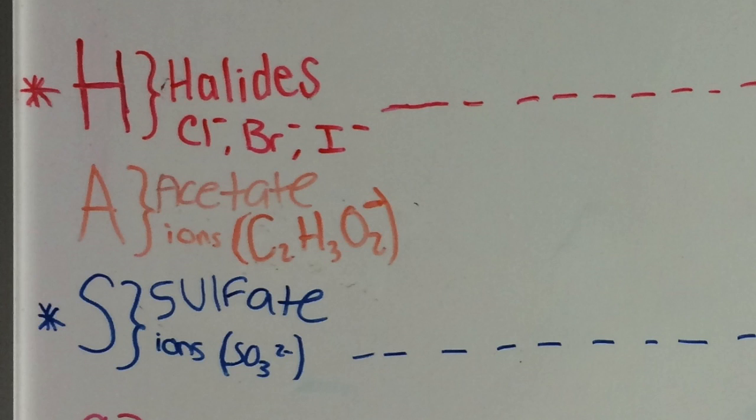Then comes the A, which is acetate, and that is C2H3O2 with a negative charge. And then the S, which is sulfate ions, which are SO4 with the two negative charge.